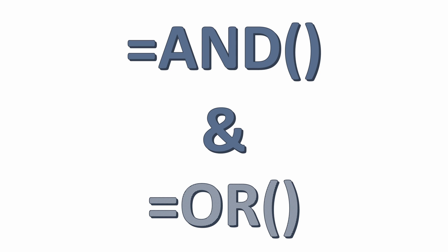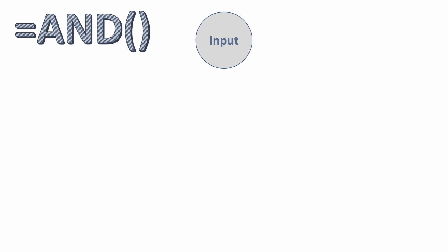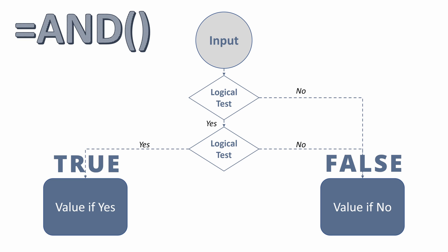So that is the basics of it. Let's get into AND and OR statements, which make this a little bit more complex as they have multiple logical tests. With an AND statement, we start with an input and we have our first logical test. If that test is false, we return the value of no automatically. If it's yes, we'll do another logical test. If that test is no, we return the same value of no or false. If that value is also true, then we return the value of true or yes.